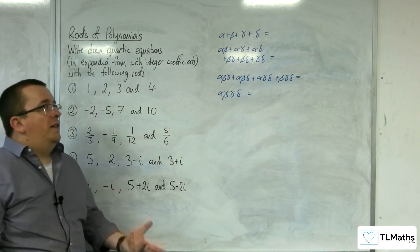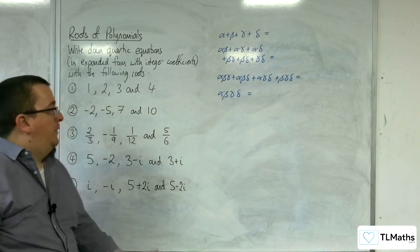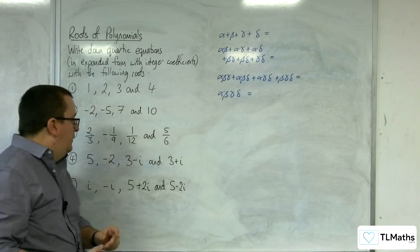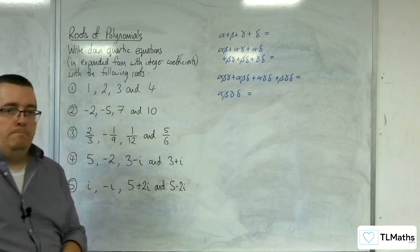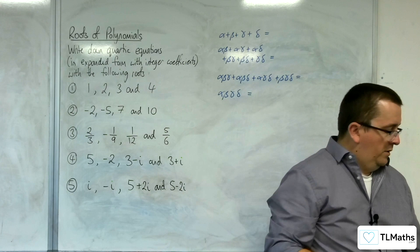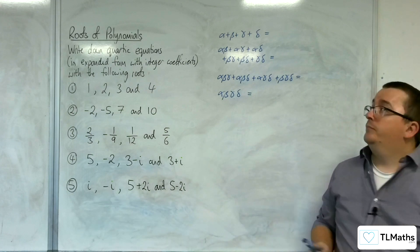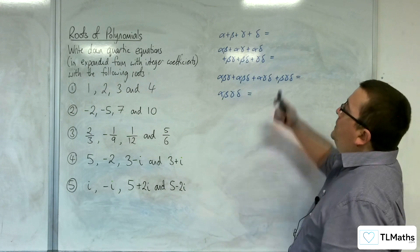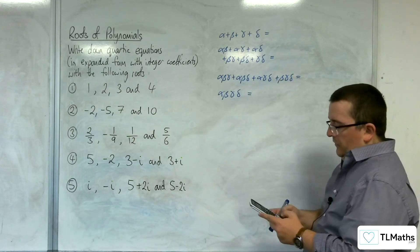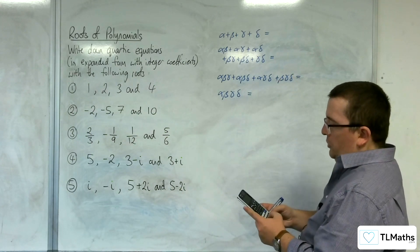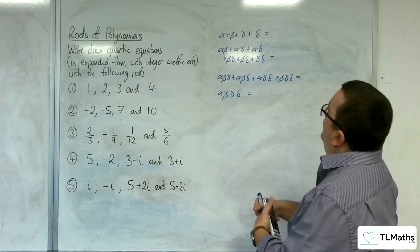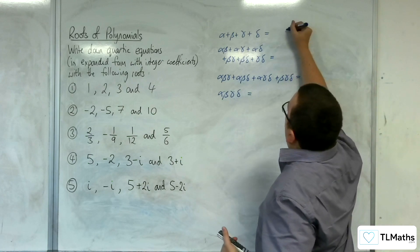Now, what are alpha, beta, gamma, delta? Well, they are these values here. So I need to combine them. First of all, we've got alpha plus beta plus gamma plus delta, so 1 plus 2 plus 3 plus 4 for number 1, and that is 10.